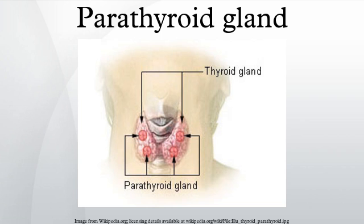Each parathyroid vein drains into the superior, middle, and inferior thyroid veins. The superior and middle thyroid veins drain into the jugular vein, and the inferior thyroid vein drains into the brachiocephalic vein. Lymphatic vessels from the parathyroid glands drain into deep cervical lymph nodes and paratracheal lymph nodes.